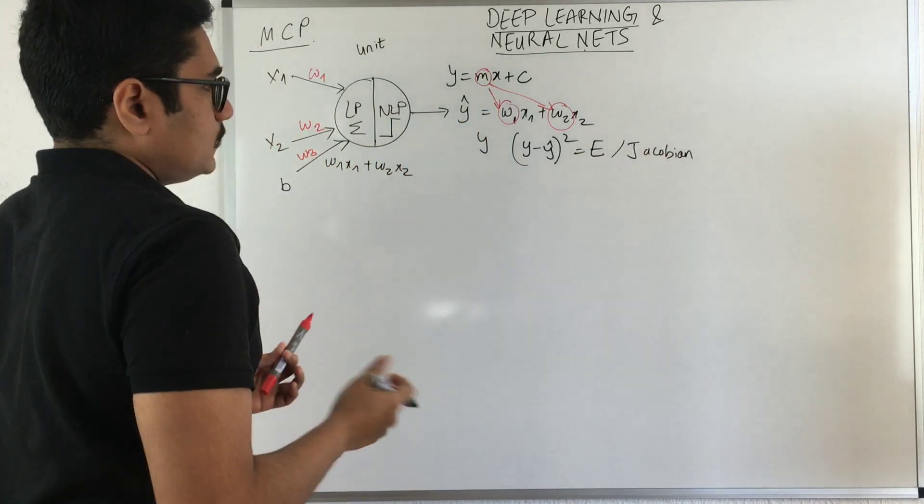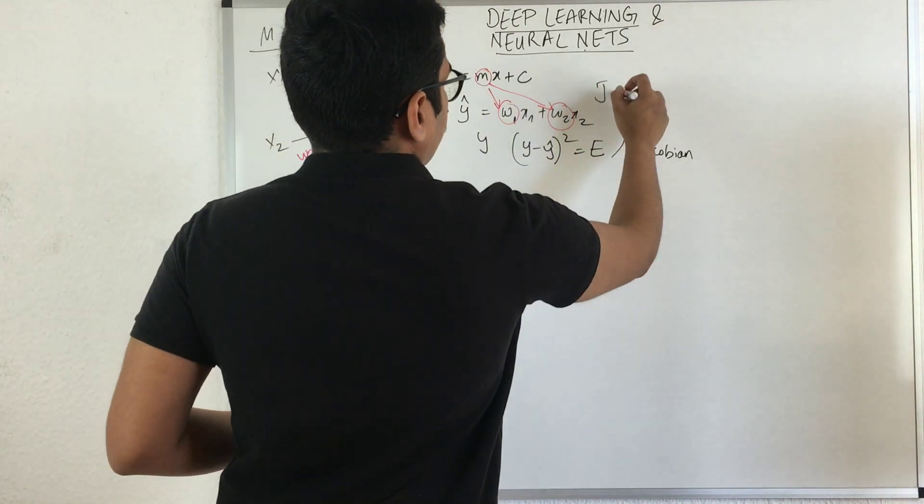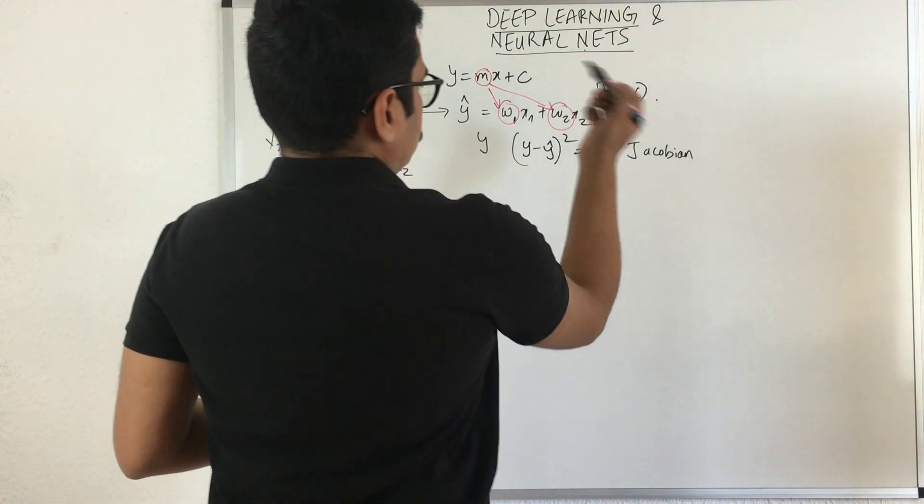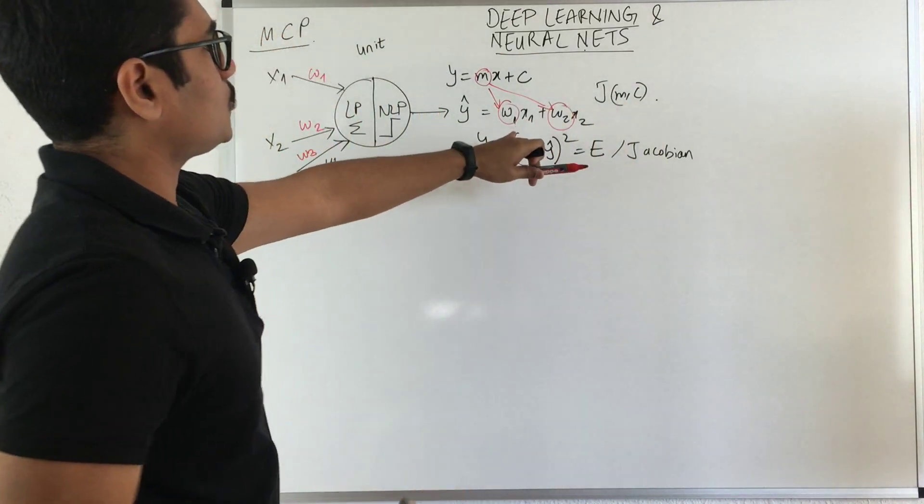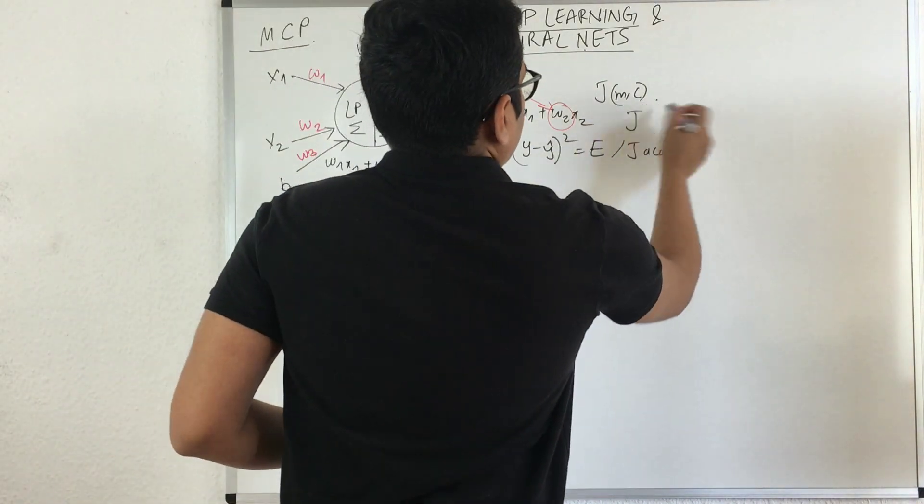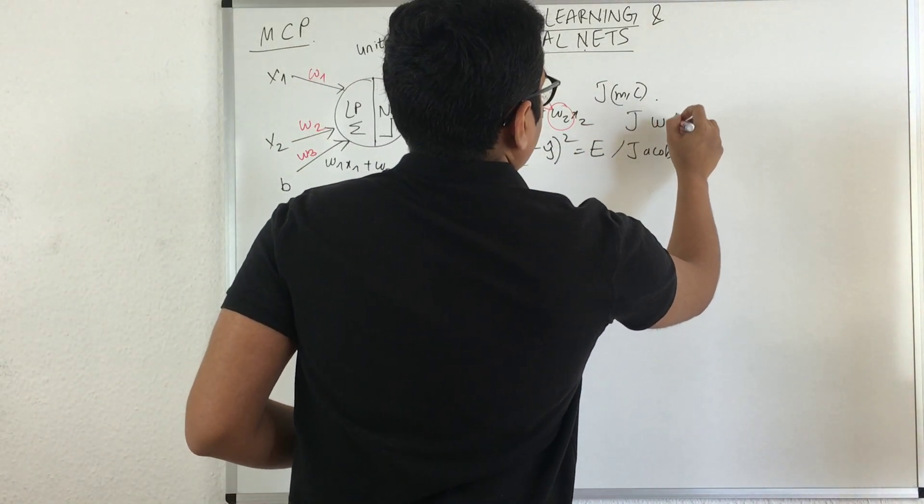J is essentially a function of your M and C. That we saw from linear regression. Essentially here also it's a function of your bias as well as your weights.